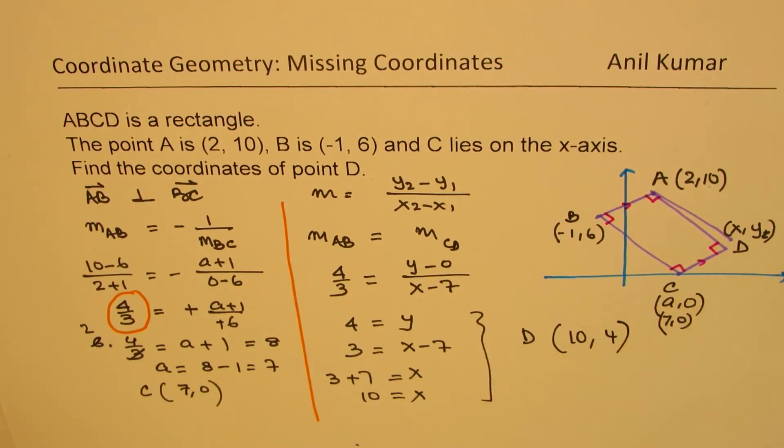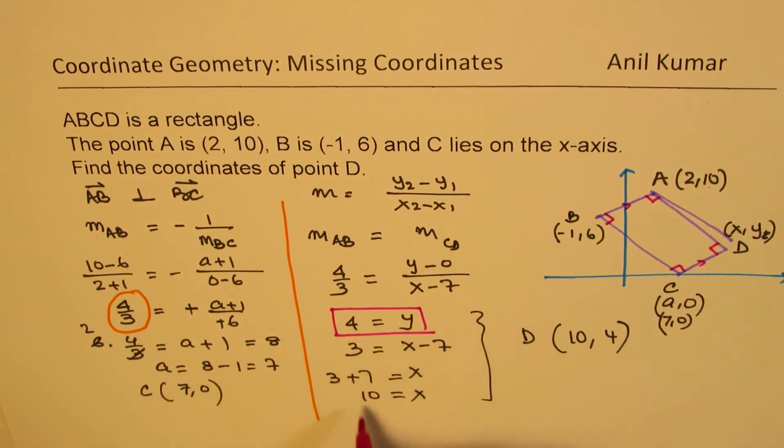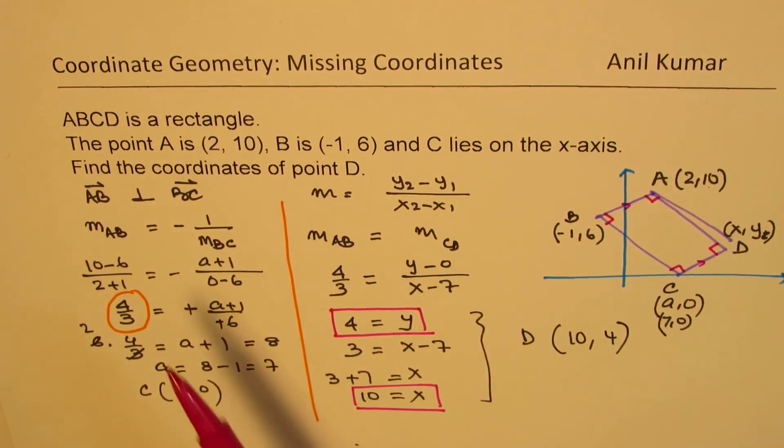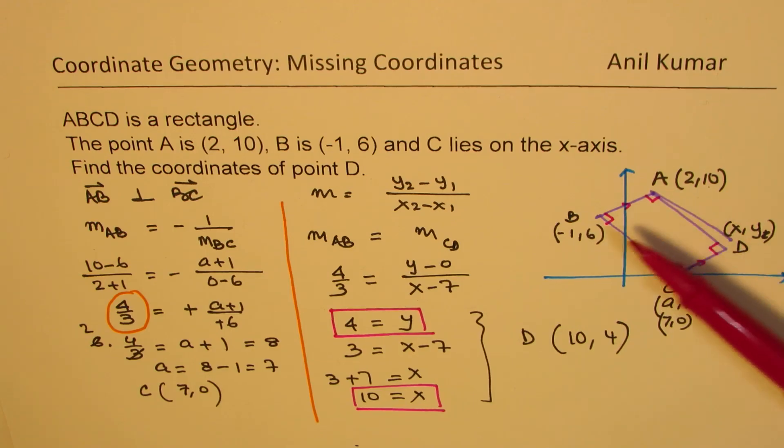So we get those two points also. So we get y equals to 4 and x equals to 10. So I hope you understand these steps involved to find this particular solution. So this is a very efficient way of finding the missing points. So what we did was that first we found C by equating perpendicular lines and then we found CD by using parallel lines. Perfect. So I hope that makes sense.